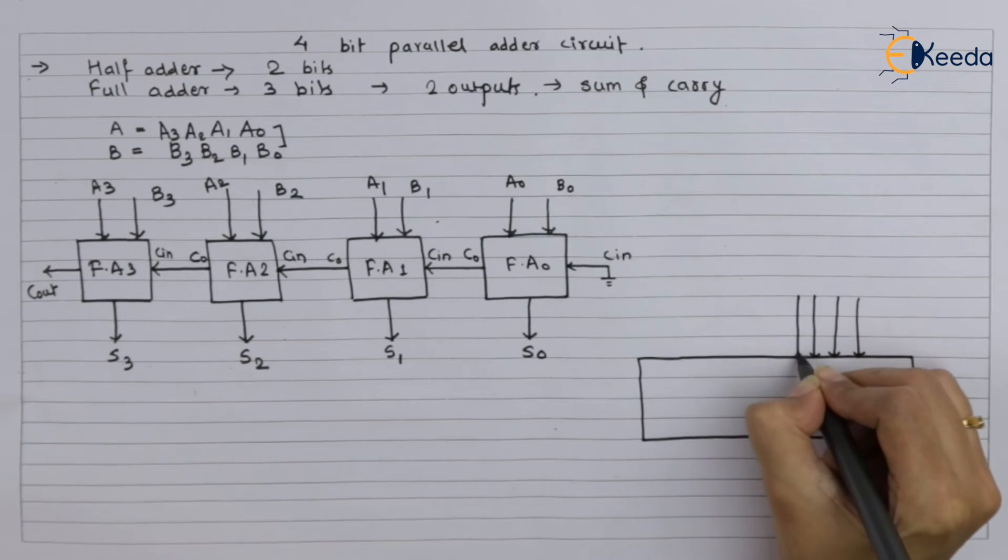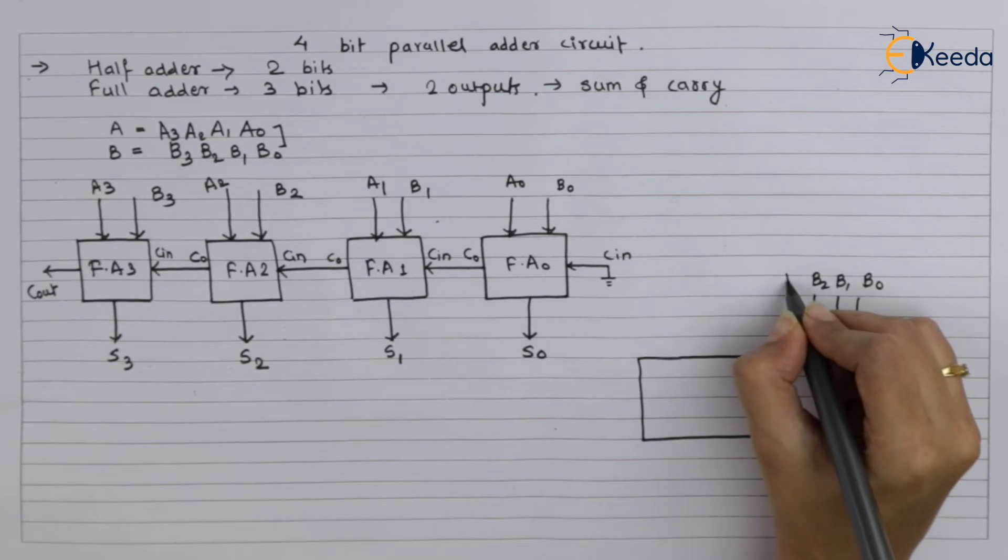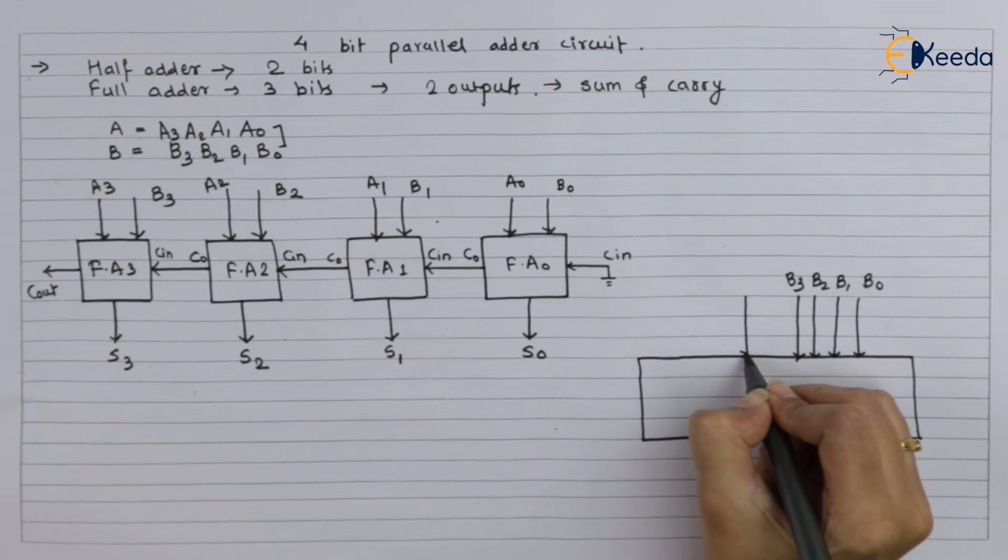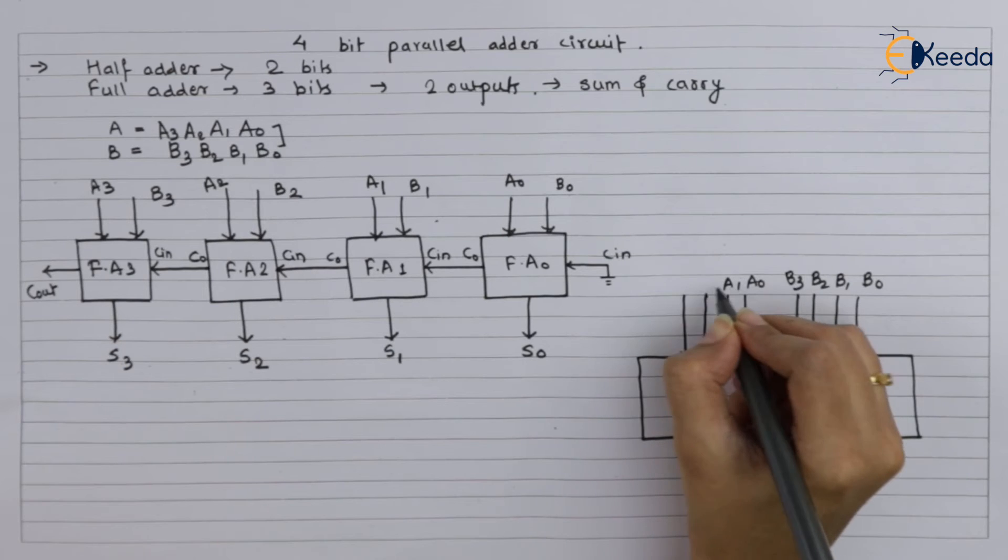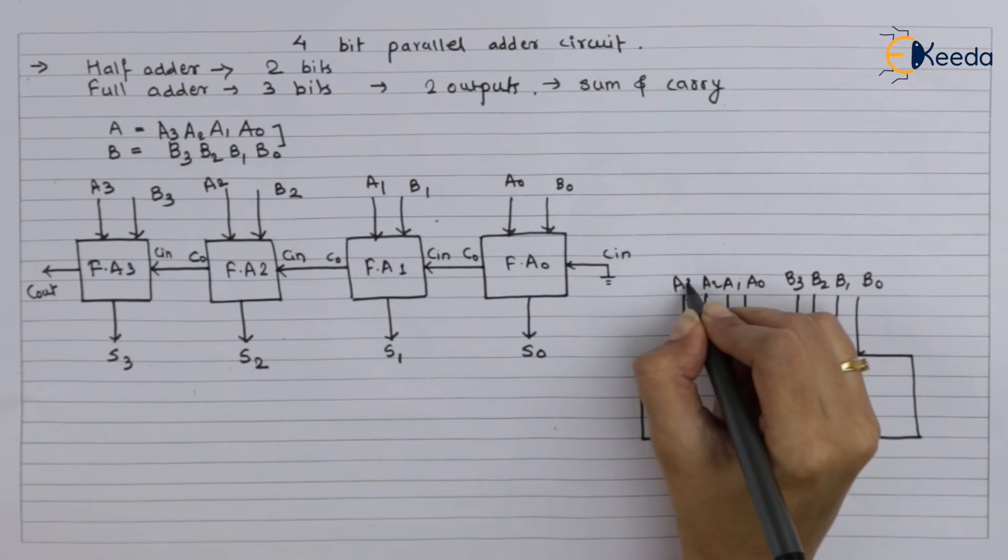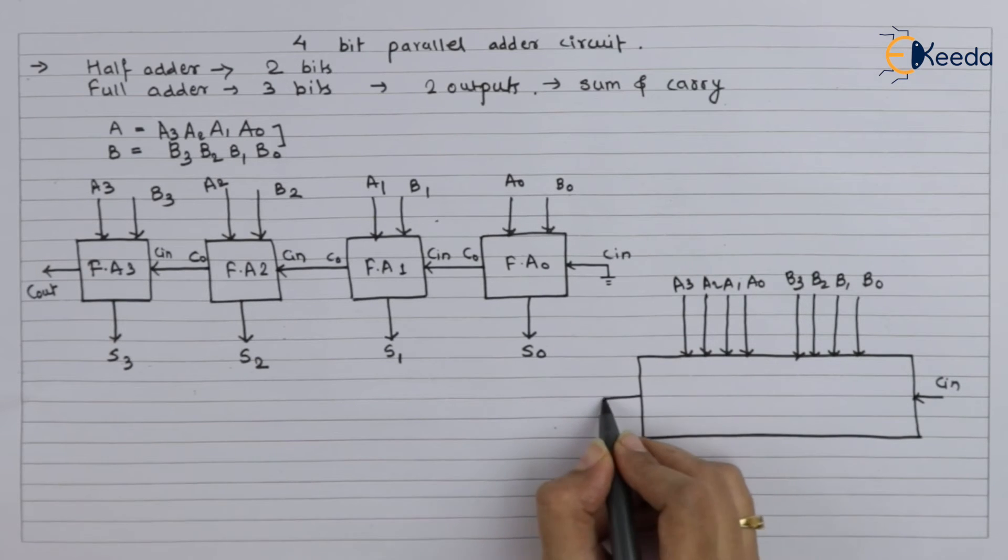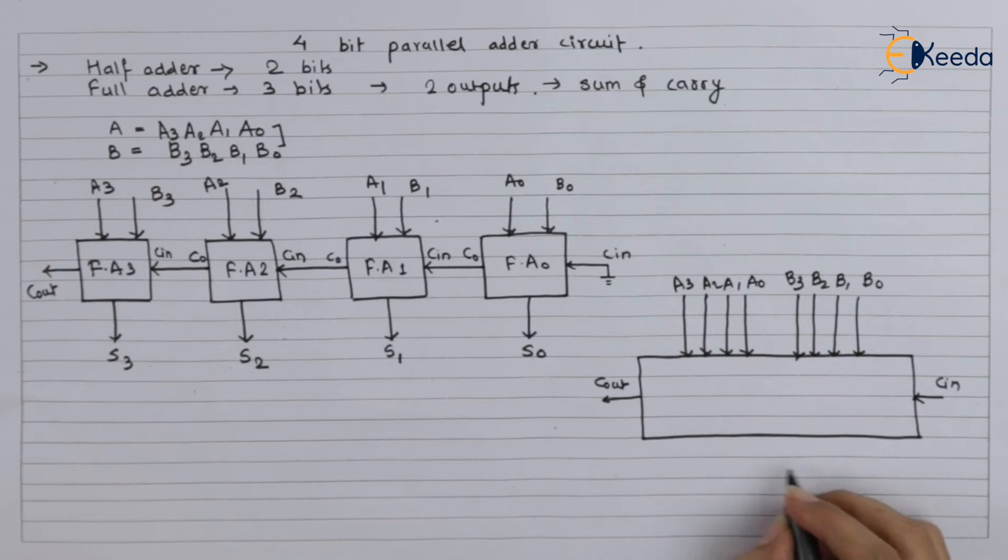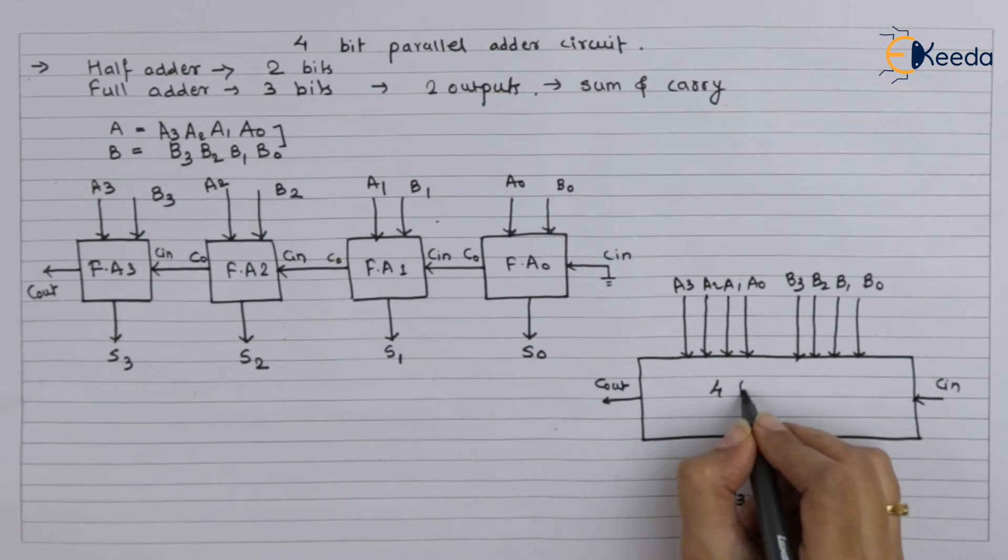So that word is B, so here B0, B1, B2, and B3. After that you have A0, A1, A2, and A3. Then C_in you have to show, and here C_out you have to show.